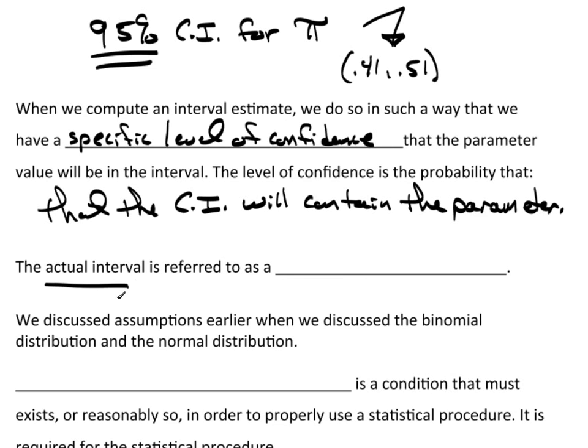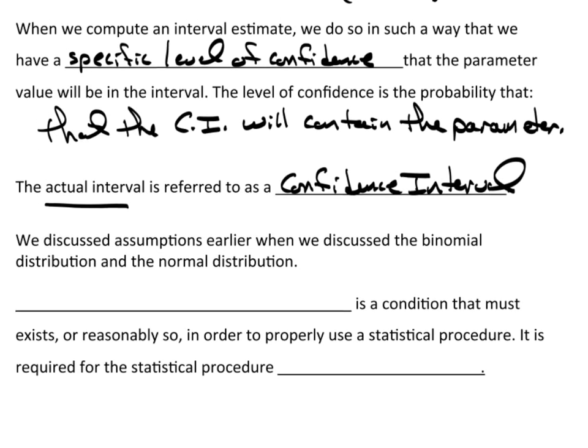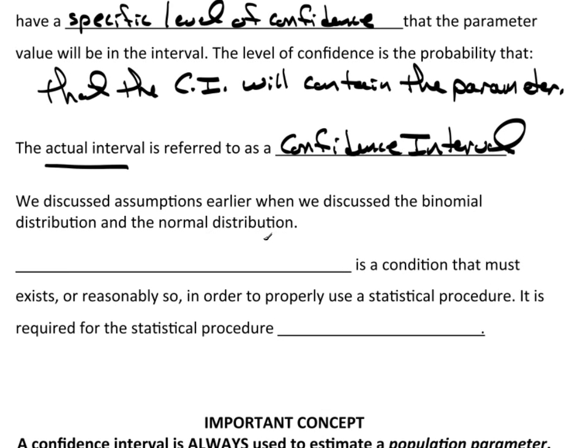Now the actual interval that we're going to build is referred to as, I've been using the term CI, as a confidence interval. Now, just as a brief review, you know that we discussed the assumptions much earlier when we discussed the idea of the binomial distribution and the normal distributions. There are certain assumptions that we had to have satisfied before we could use those distributions.